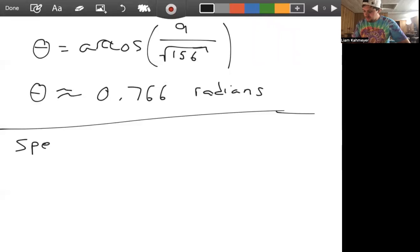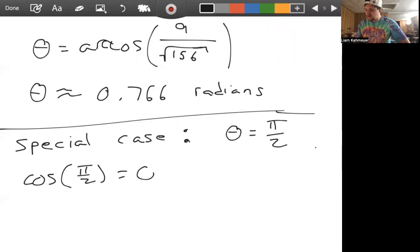So I want to look at a special case here. What happens when theta is pi over 2? Well, when theta is pi over 2, cosine of pi over 2 is 0. And if cosine of pi over 2 is 0, that means U dot V is equal to magnitude of U times magnitude of V times 0, which means U dot V is 0.